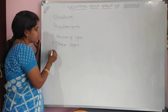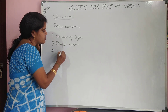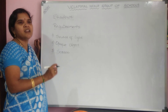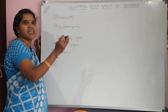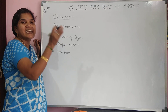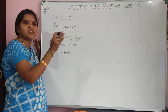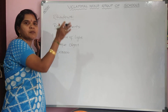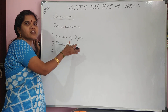Apart from this, we also require a screen to see the shadow. If there is no screen, we cannot see the shadow. When source of light falls on an opaque object, the opaque object does not allow the light to pass through it — it blocks the light. As it blocks the light, a dark patch forms on the screen.